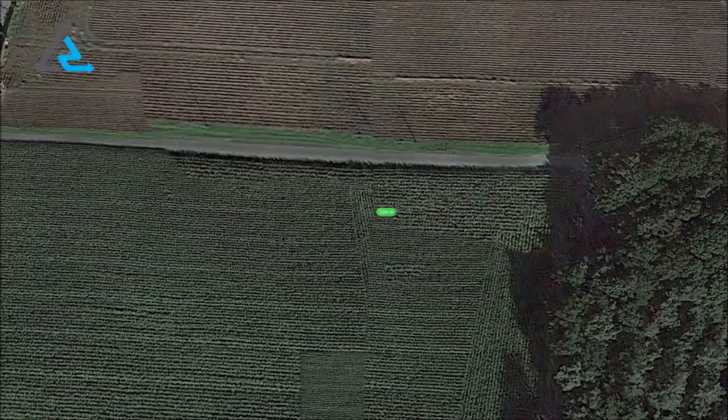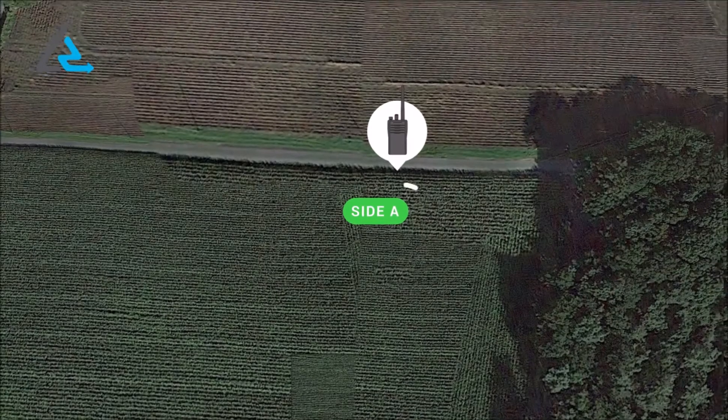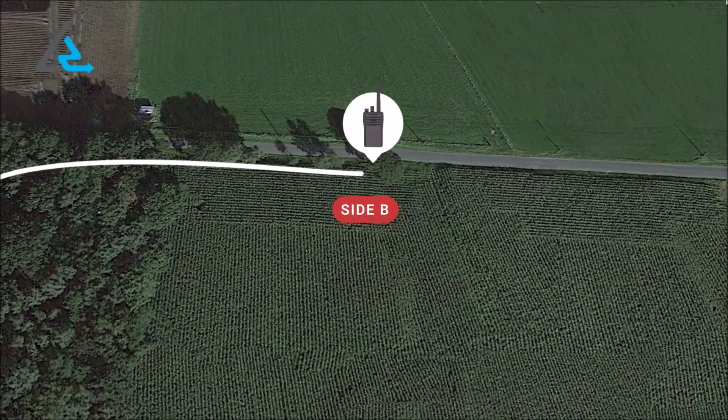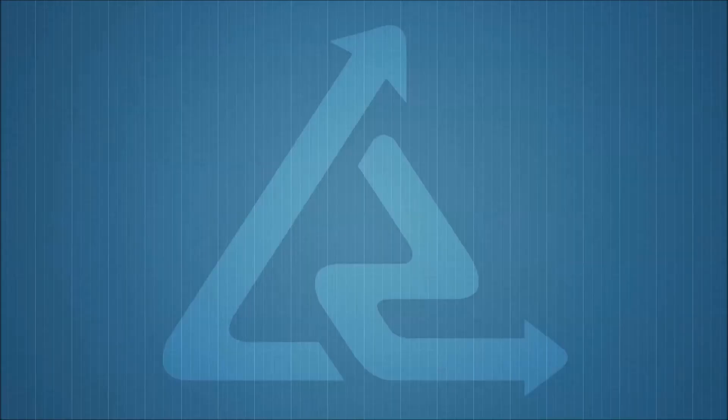Although a constant speed is not required, Reditect recommends to pull the probe at a gradual speed of one to one and a half meters per second.